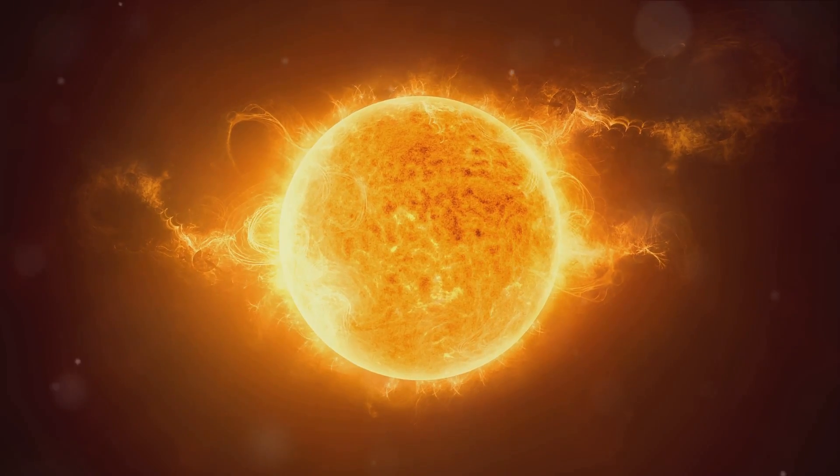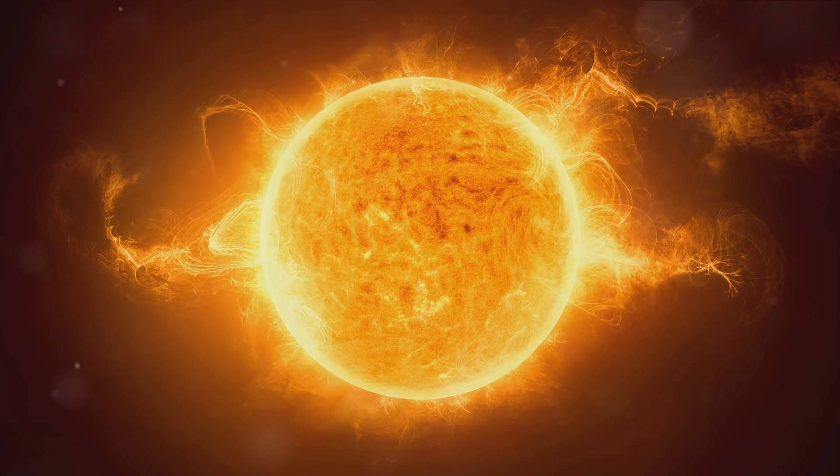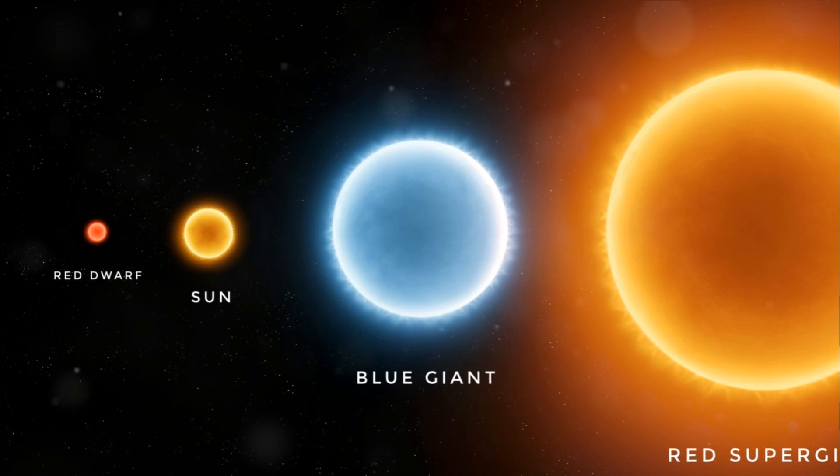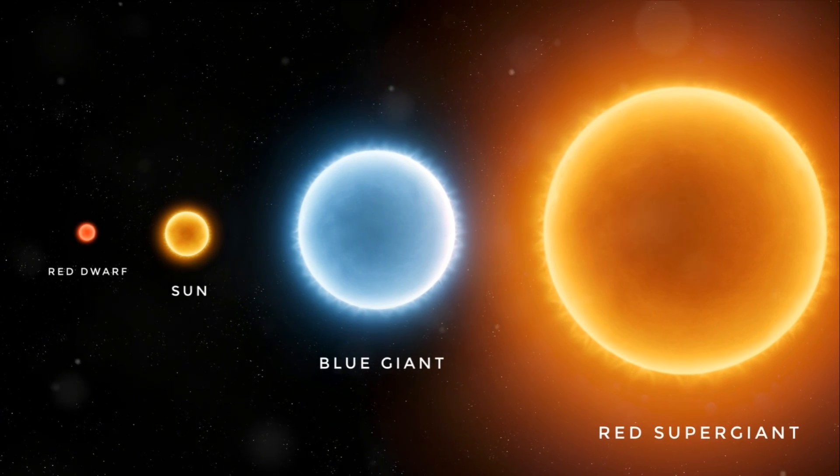For example, main sequence stars—these are the most common stars like our sun, shining steadily through nuclear fusion. Or giant and supergiant stars—these are larger, brighter stars that have expanded from their main sequence phase.